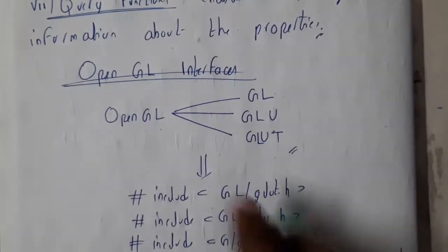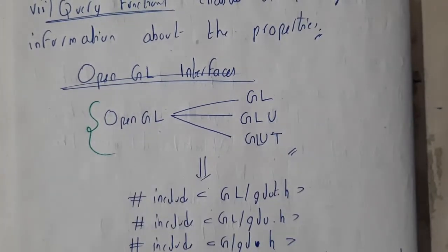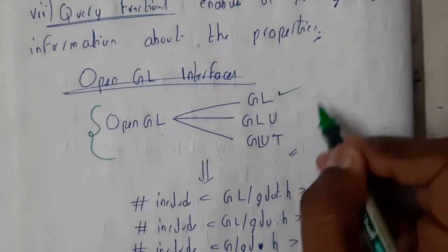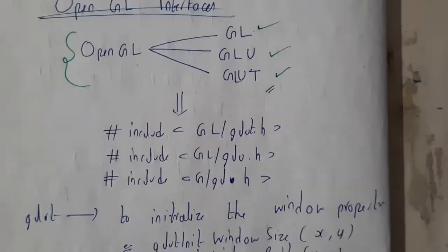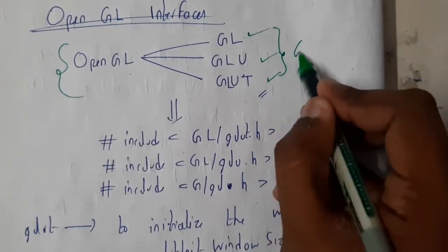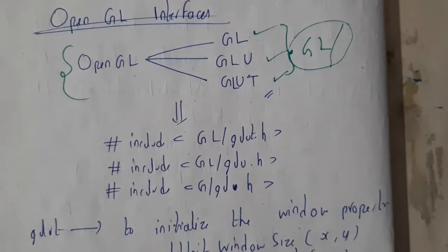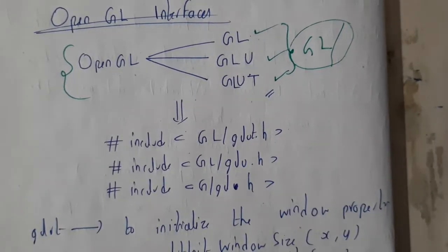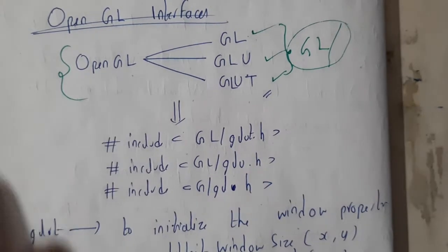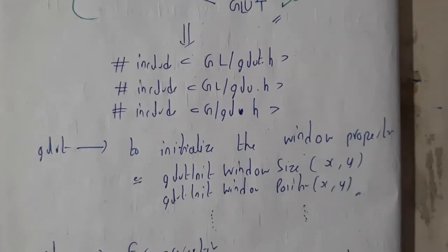In OpenGL, we have three main header files. These are all available in the GL folder. We need to copy these extra files whenever you need to use GLUT. Basically, these three are used. Now let us go through a one-line description about these.